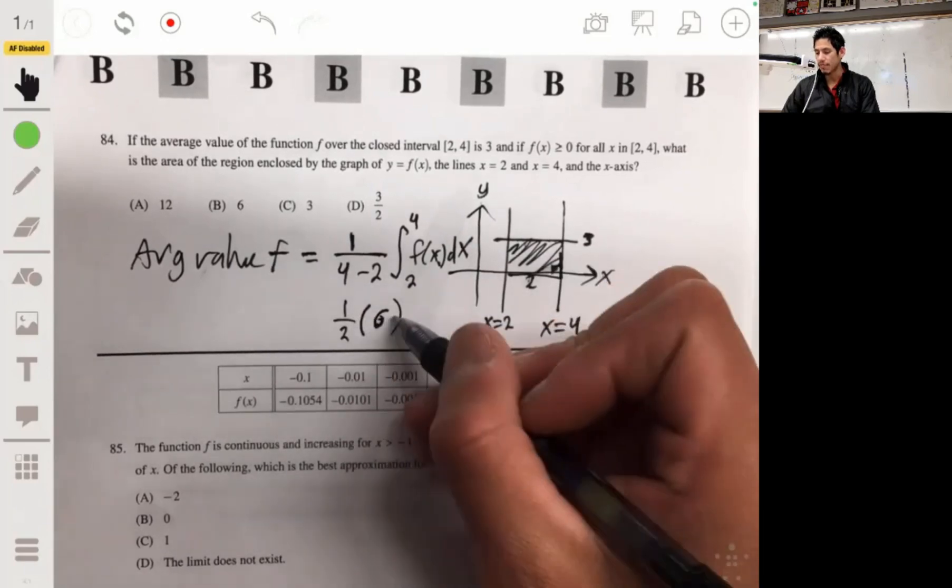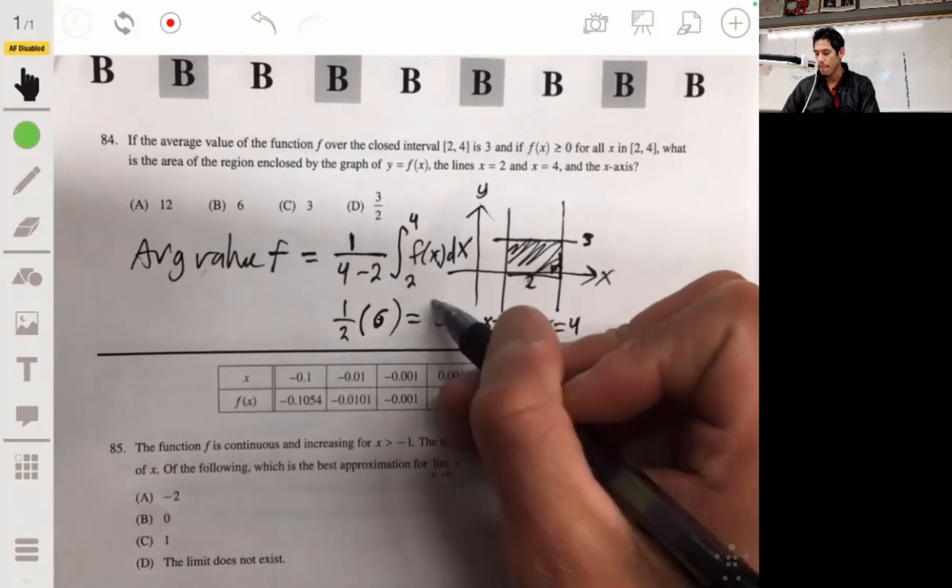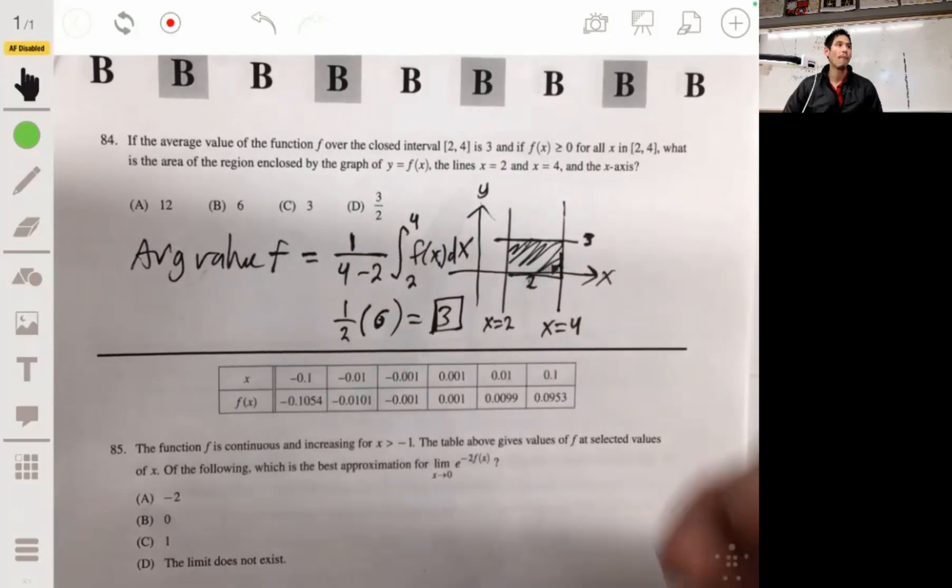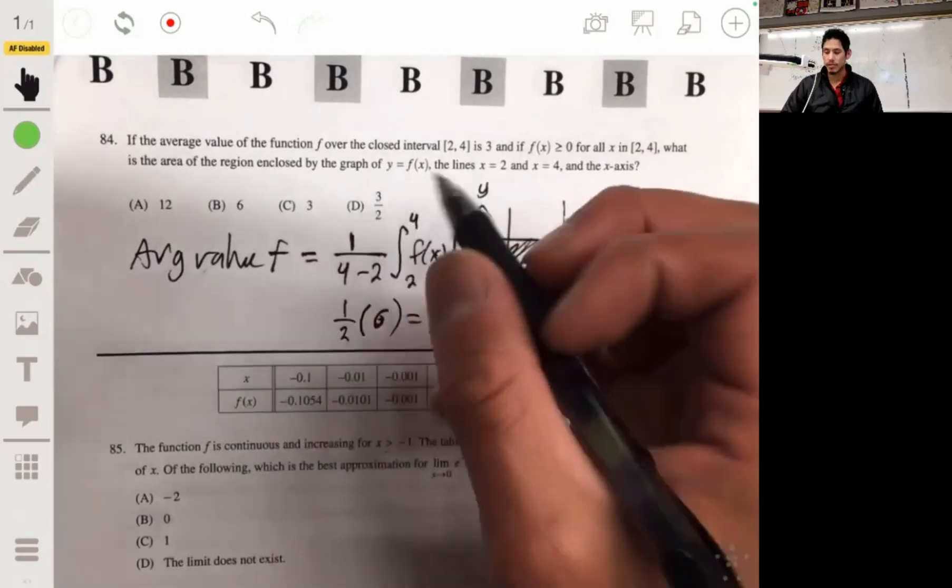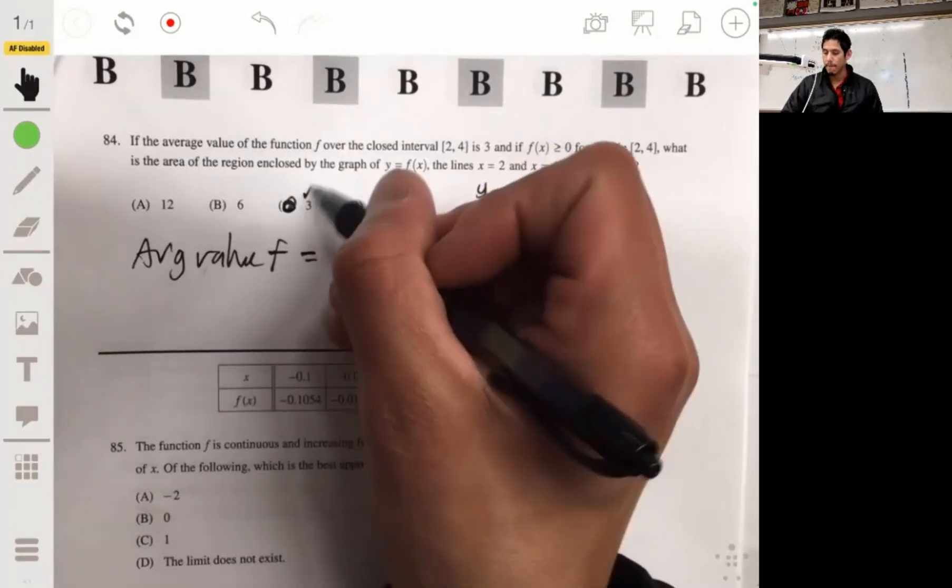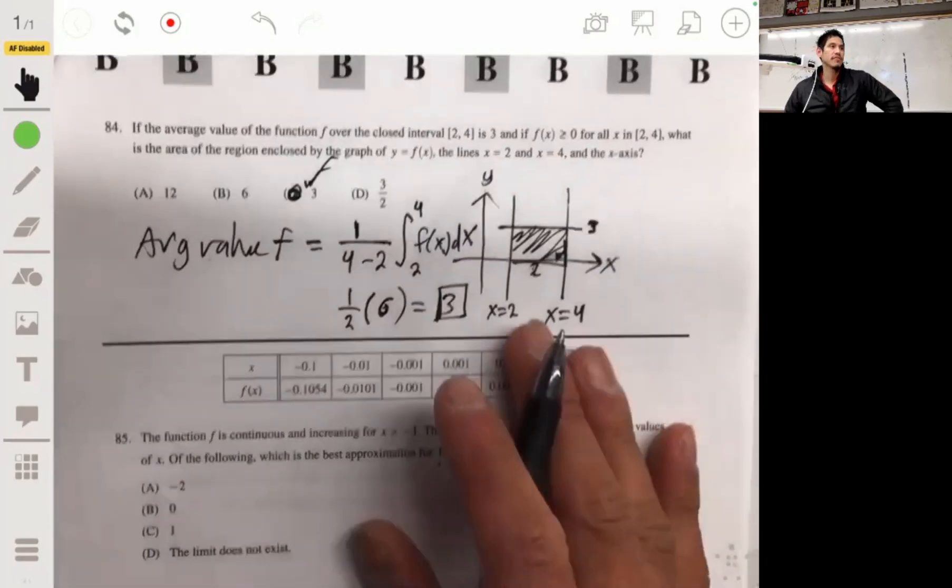Half of 6 is 3, and the answer will be C for average value function.